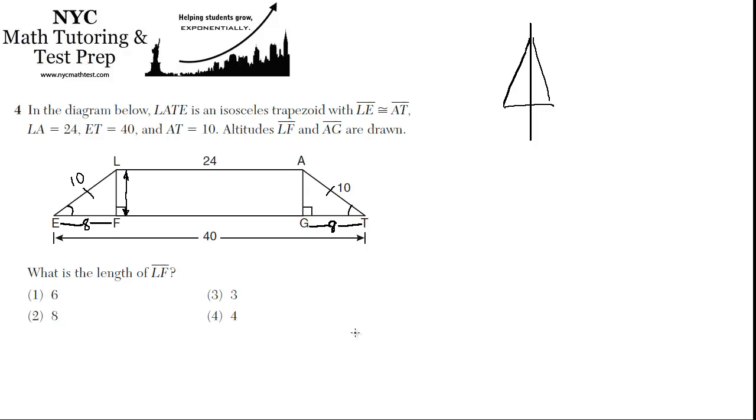And now, in order to find LF, we can use the fact that this is a right triangle, because they drew this altitude LF, and there's a right angle. So now we can use the Pythagorean theorem to find the length of LF.